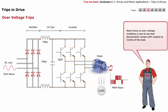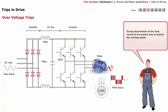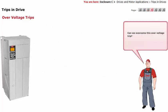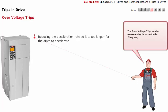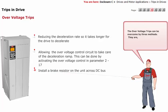Most times, an over voltage condition is due to too fast deceleration ramps with respect to the inertia of the load. During deceleration of the load, inertia of the system acts to sustain the running speed. The over voltage trips can be overcome by three methods: reducing the deceleration rate so it takes longer for the drive to decelerate; allowing the over voltage control circuit to take care of the deceleration ramp, which can be done by activating the over voltage control in parameter 217; or installing a brake resistor on the unit across the DC bus.